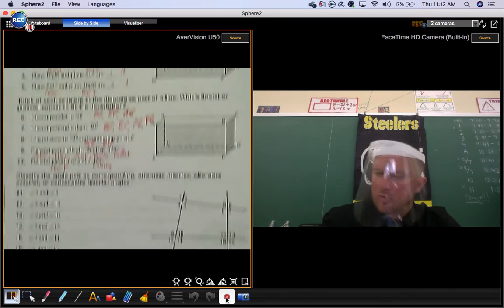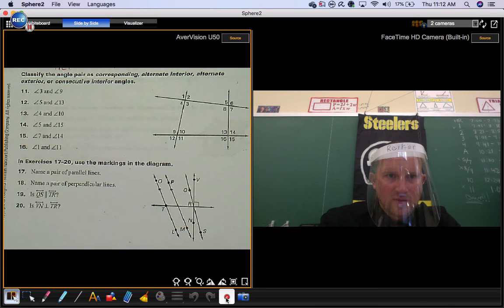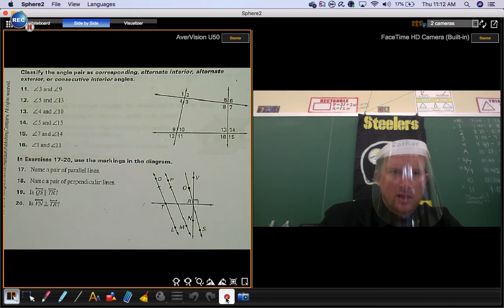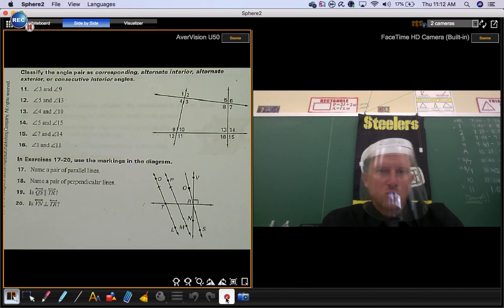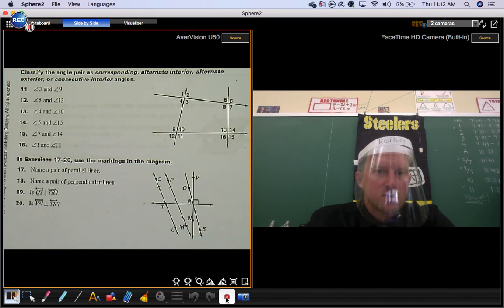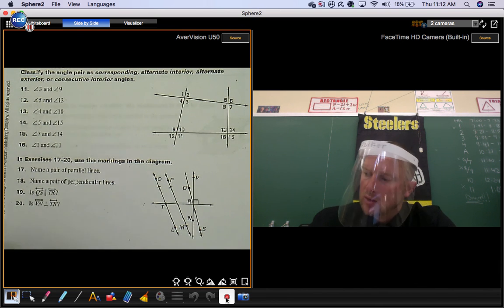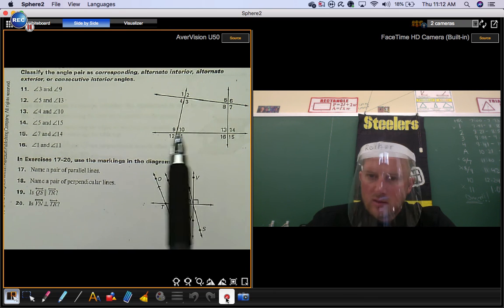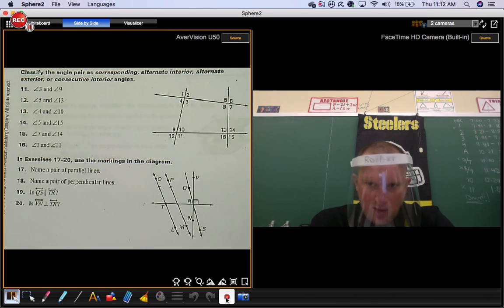We practice A for section 3.1. We're going to look at numbers 11 through 20. We're going to classify each angle pair as corresponding, alternate interior, alternate exterior, or consecutive interior angles. Notice that we have four lines. Each one will act as a transversal for two other lines.